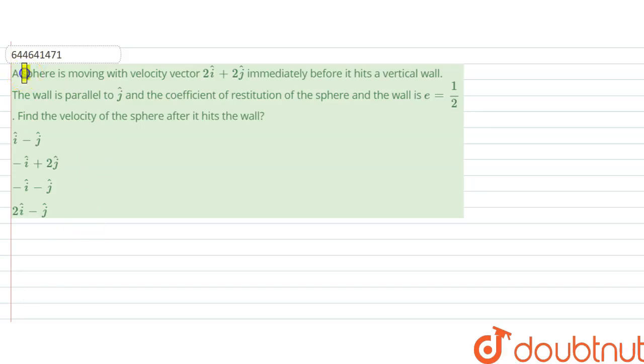The question says a sphere is moving with velocity vector 2i plus 2j immediately before it hits a vertical wall. So let us say this is a vertical wall, and a sphere is here. It is moving with velocity at some angle, 2i plus 2j. That is the velocity vector initially.